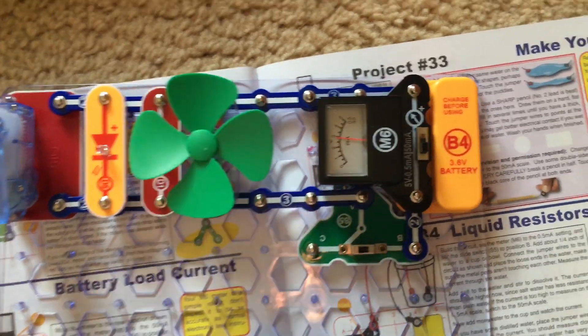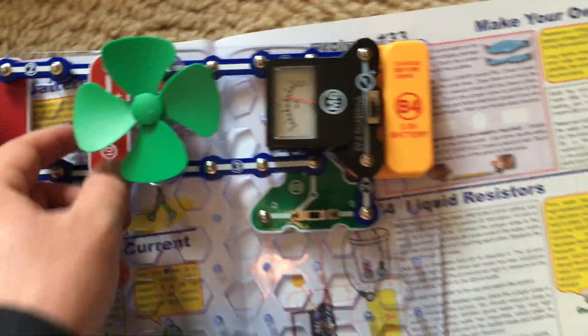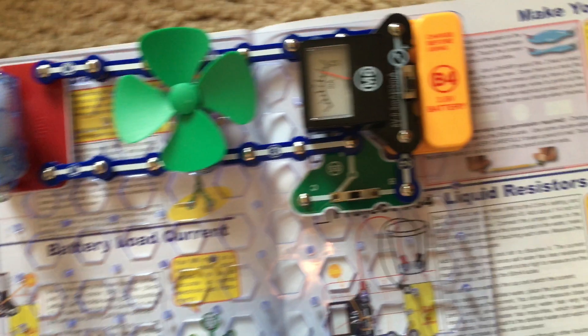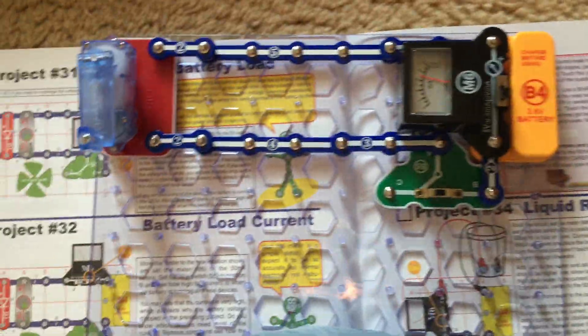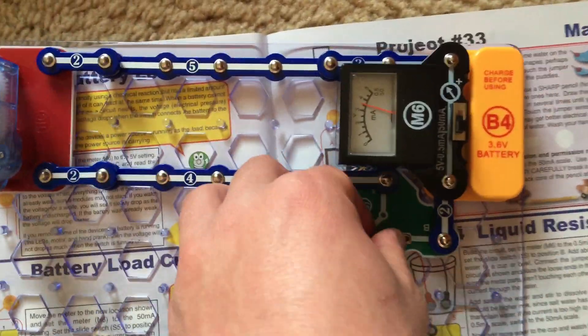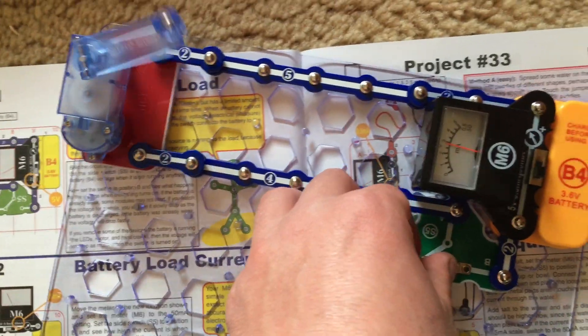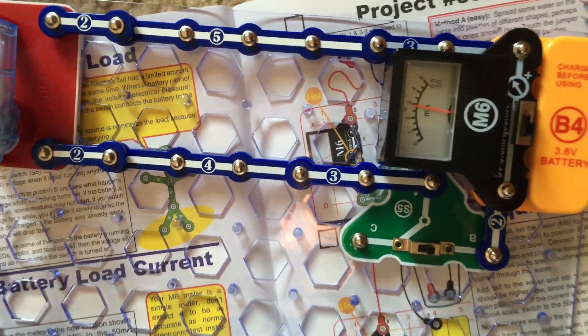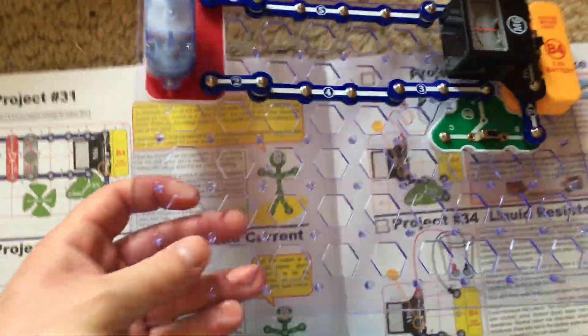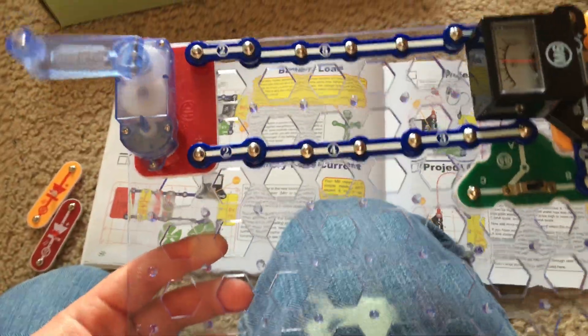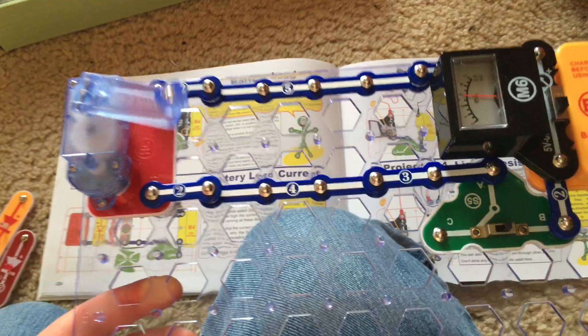If we were to remove some devices, like removing the two LEDs and the motor leaving only the hand crank, then the voltage does not seem to drop as much because there were not as many components for the current to flow to.